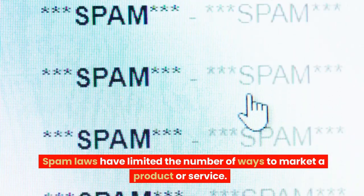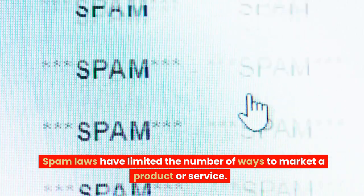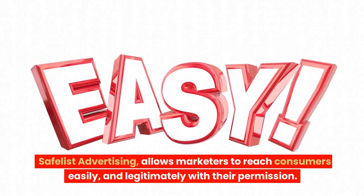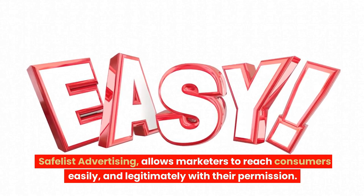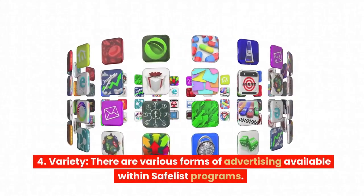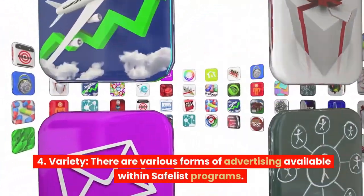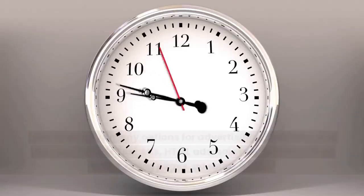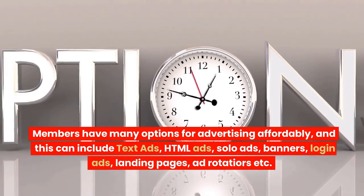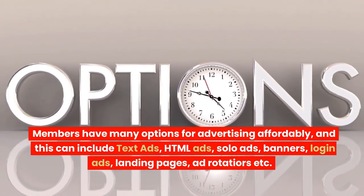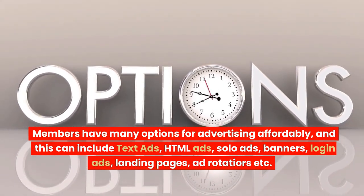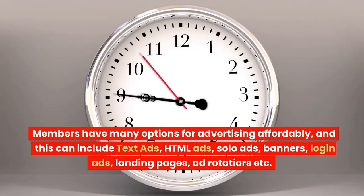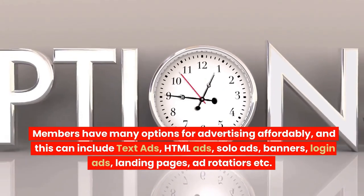Spam laws have limited the number of ways to market a product or service. Safelist advertising allows marketers to reach consumers easily and legitimately with their permission. Number four, variety — there are various forms of advertising available within safelist programs. Members have many options for advertising affordably, including text ads, HTML ads, solo ads, banners, login ads, landing pages, ad rotators, and more.